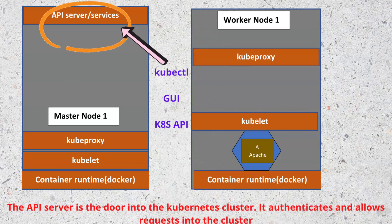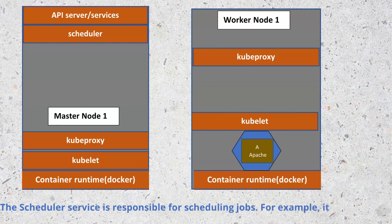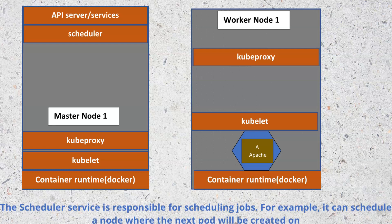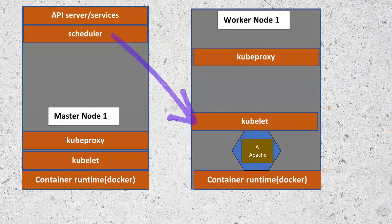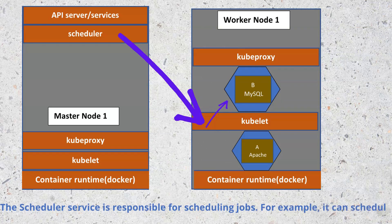Another important service on the master node is the scheduler. When the API server authenticates you into the cluster, the scheduler takes over, plans, and chooses the nodes on which to distribute components. It is very smart and can schedule which node the next component — like a pod — will be created on. After that, the kubelet takes over from the scheduler and creates and starts the component, so the scheduler just plans and distributes while the kubelet does the actual work.